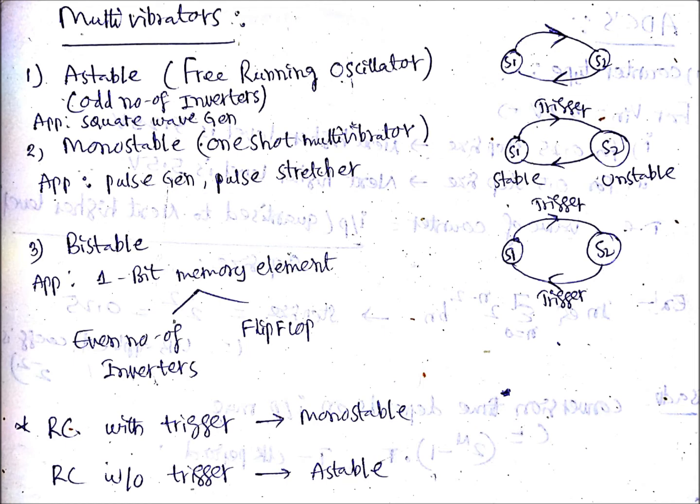The applications are like one-bit memory element. How you are going to implement bistable? Either using one flip-flop or using even number of inverters. Why even number of inverters? Because it is opposite to astable. Let us take two as an even number and use two inverters. If you give input to the first inverter one, the output will be zero. That will be applied to the second inverter, so the final output will be again one. The input and output are same - this is the main concept in multivibrators.